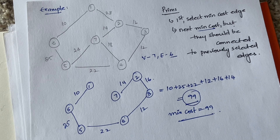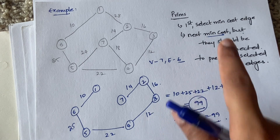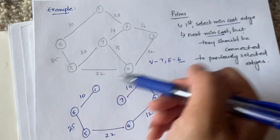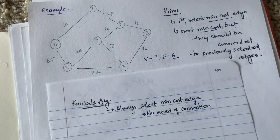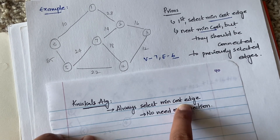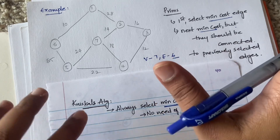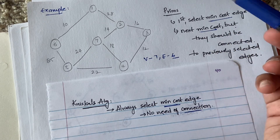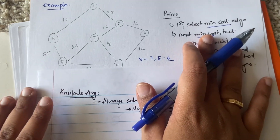Now let us apply Kruskal's algorithm to the same graph. The key difference between Prim's and Kruskal's is this: in both algorithms you start with the minimum cost edge, but in Prim's, for subsequent steps you must look for connections to already selected vertices. In Kruskal's, you do not need to worry about connections at all — you simply keep selecting the next minimum cost edge globally.